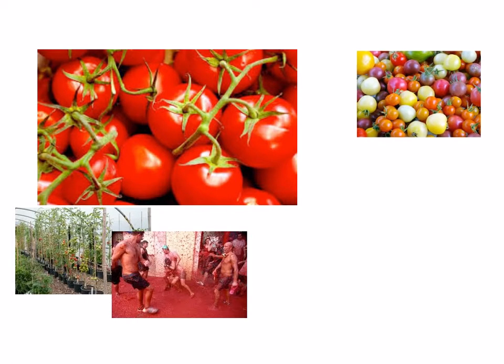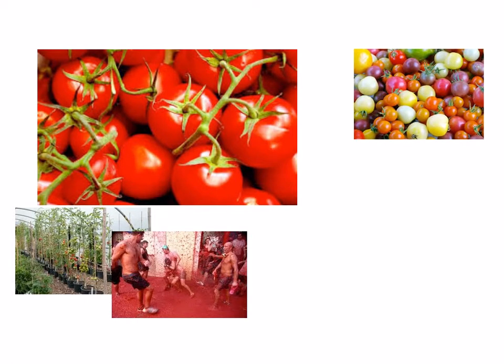Secondly, tomatoes are not homogeneous and are not divisible. You can have large tomatoes, small tomatoes, ripe tomatoes, etc. And also, if you want to buy something that costs half a tomato, then you're left with the other half, which will make your trousers soggy when you put it in your pocket.